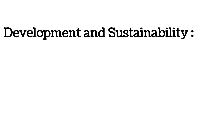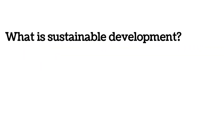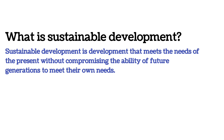Development और Sustainability एक international, multidisciplinary journal है जो socio-economic development के environmental impacts के सभी aspects को cover करती है. Sustainable Development वह development है जो future की generations की अपनी जरूरतों को पूरा करने की capacity से समझौता किये बिना present की जरूरतों को पूरा करता है.